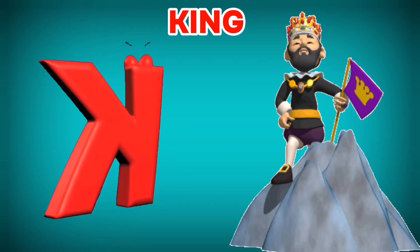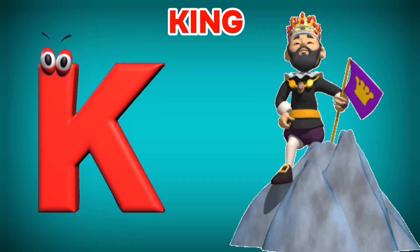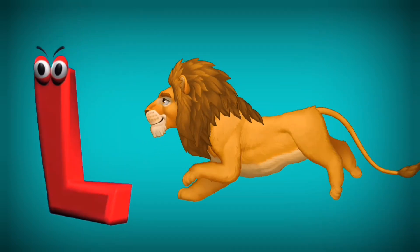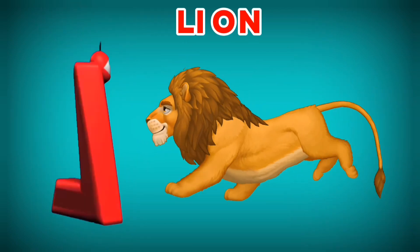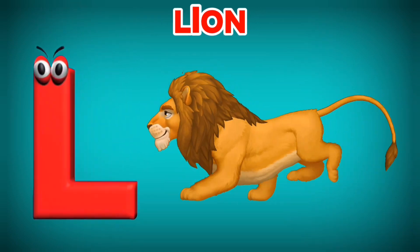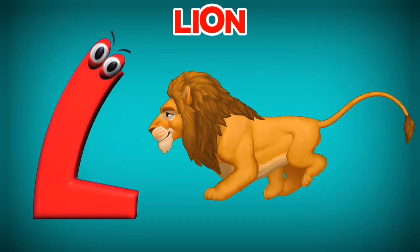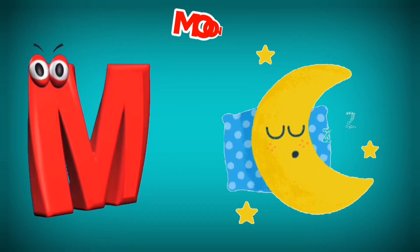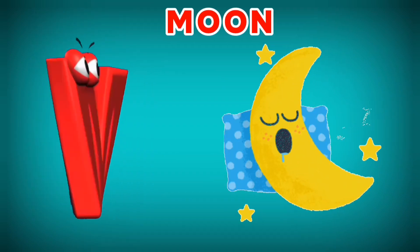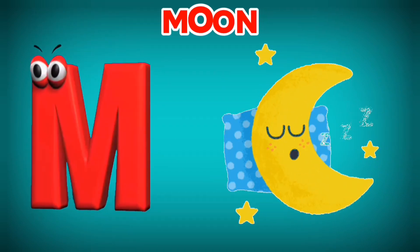K is for King. K, K. King. L is for Lion. L, L. Lion. M is for Moon. M, M. Moon.